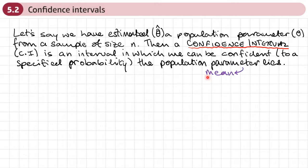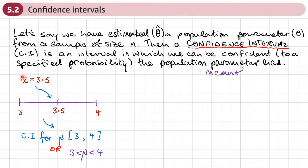The population parameter we're going to be looking at is the mean, so we won't be looking at confidence intervals for the variance or anything like that — just confidence intervals for the mean. For example, if I calculated a sample mean of 3.5, I might say that I can be confident that the population mean is between 3 and 4. If I was 95 percent confident, I would say I have a 95 percent confidence interval for the population mean to be in the interval 3 to 4.